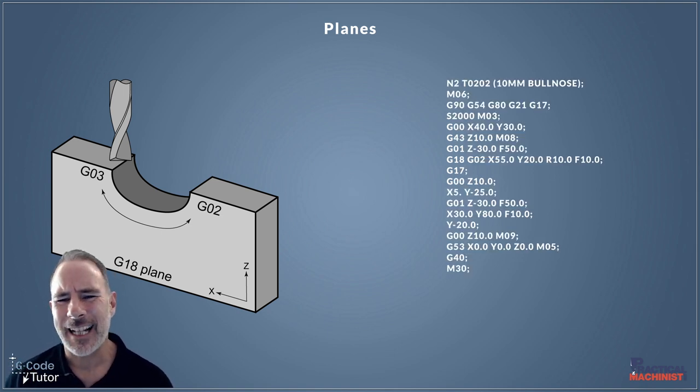We can have our plane selection G codes shared by another line of code or standalone on its own. We can quickly and easily switch between these planes just by using G17, G18, and G19.